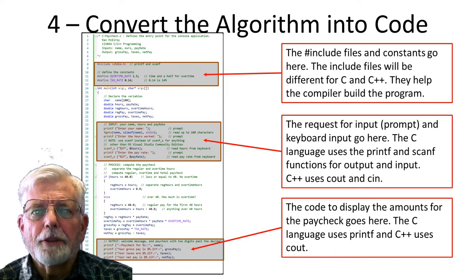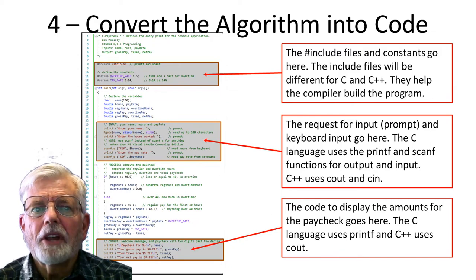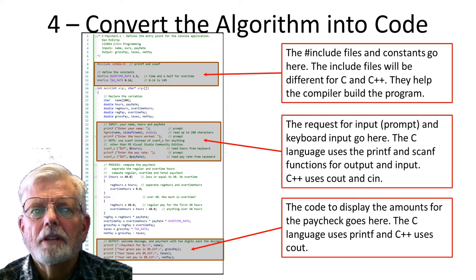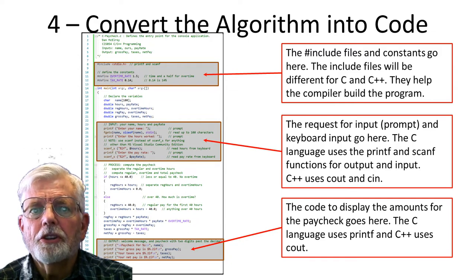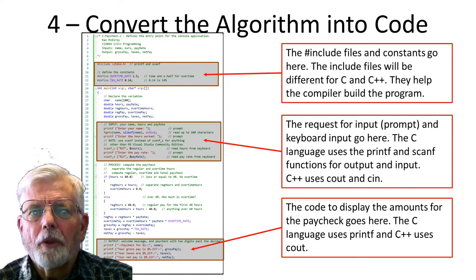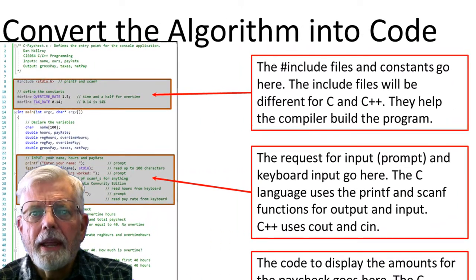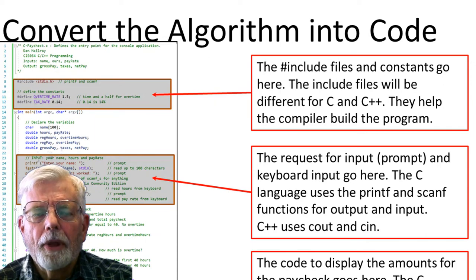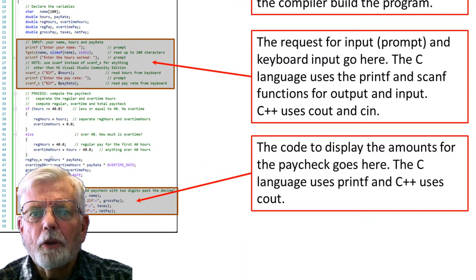The C and C++ programs are very similar. All of the logic for determining regular hours, overtime hours, regular pay, overtime pay, gross pay, taxes, and net pay is exactly the same for both languages. The big difference at this point is just the input and output statements. I have placed square boxes where there is a difference in the C and C++ code. The first one is for the include files — there is a slight difference between the C and C++ include files. Include files help the compiler build the program. The second one is for inputting data: the hours worked and pay rate. The last box is for the output.